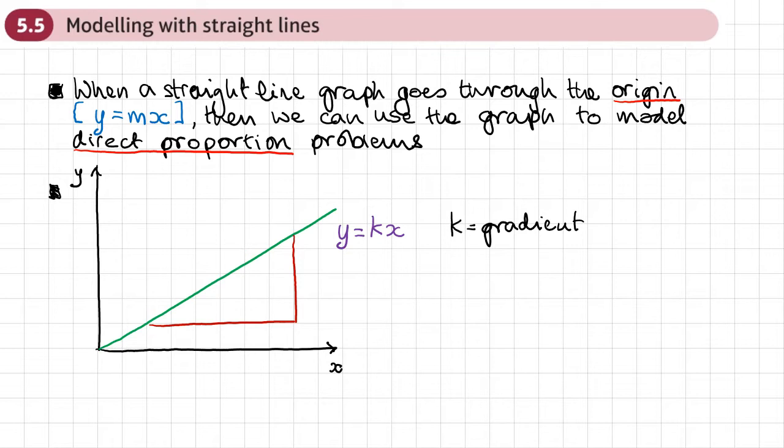Well, the definition of a gradient is that for every one unit of change in the x direction, I'm going to get a k unit of change or a k value of change in the y direction.